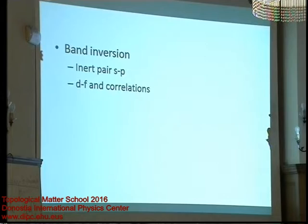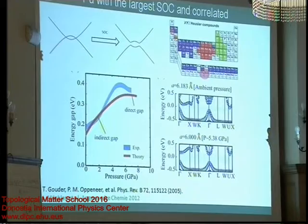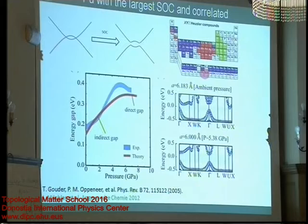We already spoke about band inversion, which so far was always s-p type. Can we find band inversions that are not s-p? I think we already have two published examples. One idea was: what is the element with the highest spin-orbit coupling? Unfortunately, it's an actinide. If you go to the actinite series, there is a sodium chloride structure series of compounds. Plutonium has the largest spin-orbit coupling — plutonium telluride is a compound with a large gap that can be increased further by pressure.